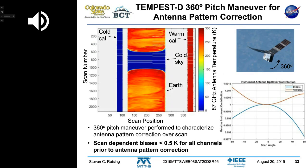Since we have a single instrument on a satellite we control — as opposed to larger ATMS-equipped weather satellites with many sensors sensitive to the sun, magnetic field, or vibration — we performed a 360° pitch maneuver and measured using the cosmic background as a source and the Earth as contrast.